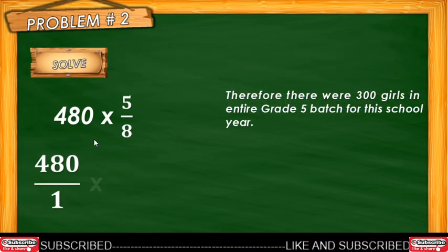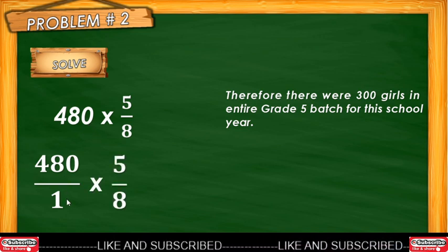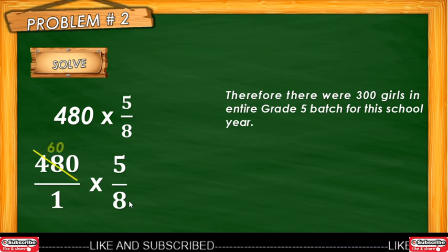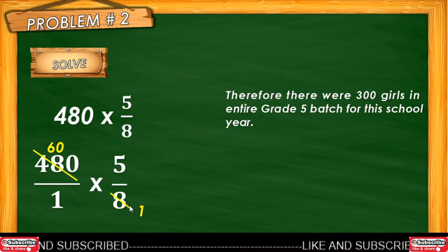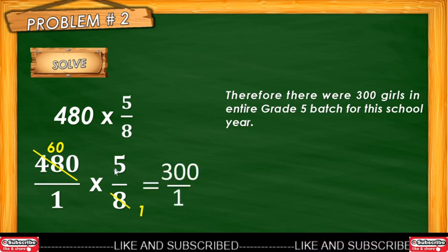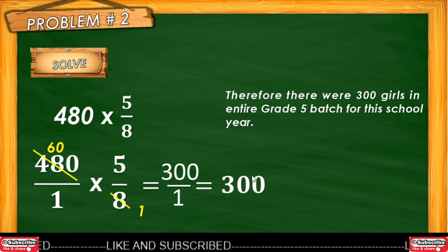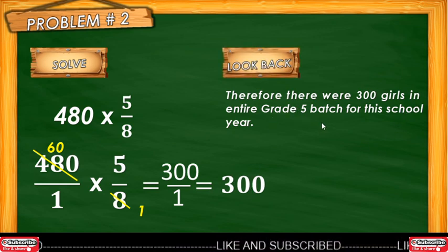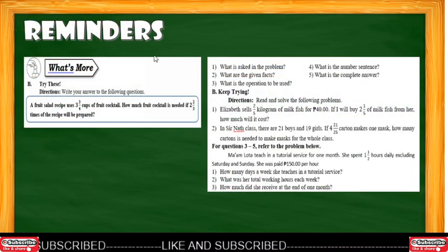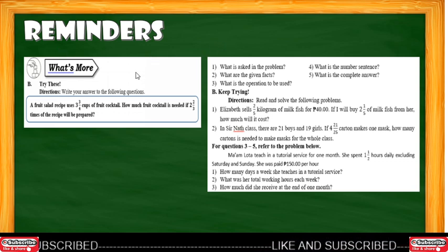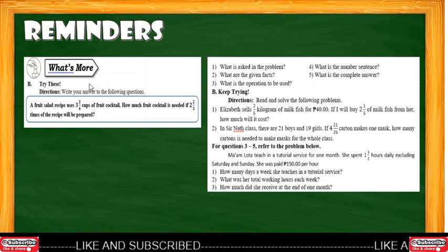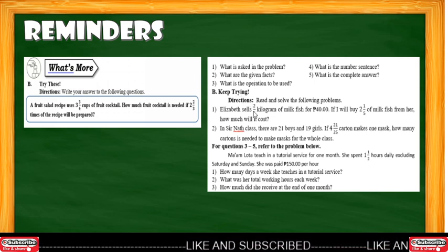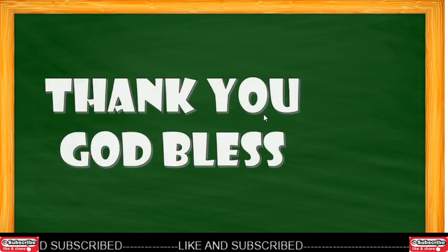Now solve. Make the whole number as a fraction, then multiply by five-eighths. Using the cancellation method: cancel the common factor between 480 and 8, which is 8. How many 8s in 480? 60. How many 8s in 8? 1. So 60 times 5 equals 300, and 1 times 1 equals 1. Simplify the answer. Therefore, there were 300 girls in the entire Grade 5 batch for this school year. For your assignment, answer the 'What's More' section — letter B on your module or worksheet. That's all for today. Thank you and God bless.